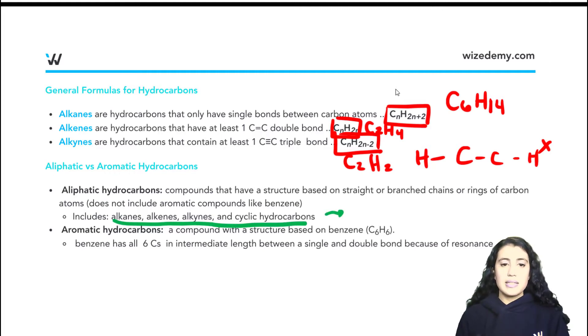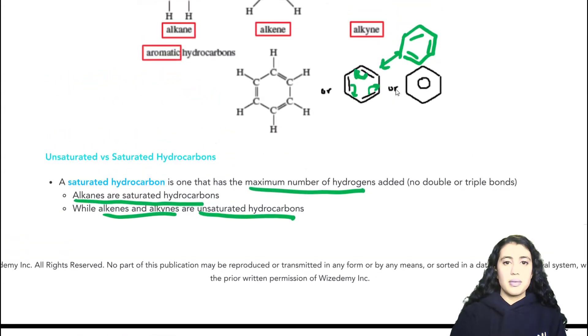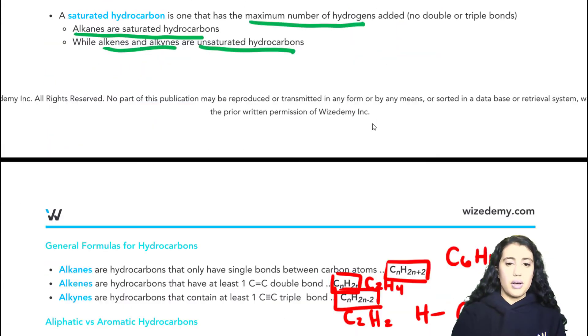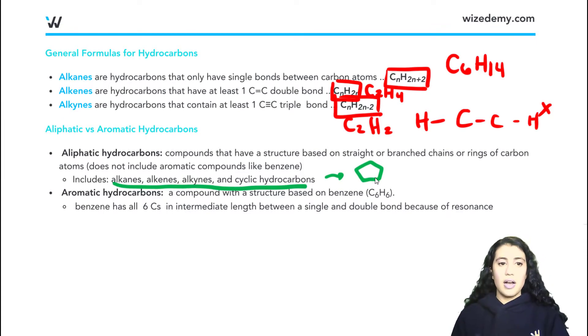We'll see this in a bit, but an example of a cyclic hydrocarbon is if we just take carbon and hydrogen atoms, and we put them in a cycle. Now, it's not the same as a benzene ring, because we don't have that resonance like we saw for a benzene ring. So the cyclic hydrocarbon is still considered an aliphatic hydrocarbon, whereas aromatic hydrocarbons is any compound that has a similar structure based on benzene. So that's C6H6. And again, we mentioned that benzene has all of its six carbons in that ring in an intermediate length between a single and double bond because of resonance. So now that we've gone through the terms, we can dive deeper into this chapter.